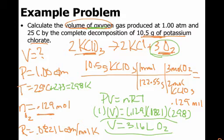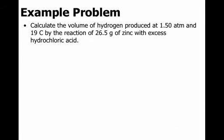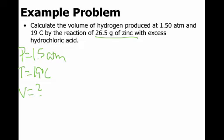If you would like to do one more, here's one more example. This one says calculate the volume of hydrogen produced at 1.5 atm, so pressure equals 1.5 atm, 19 degrees Celsius, by the reaction of 25 grams of zinc with excess hydrochloric acid. So volume - I missed this the first time through - volume is what I'm looking for.